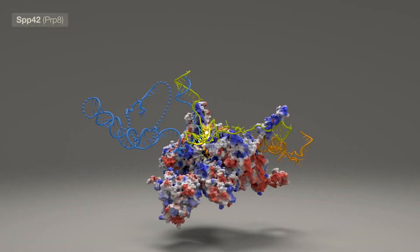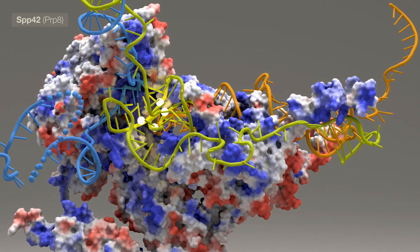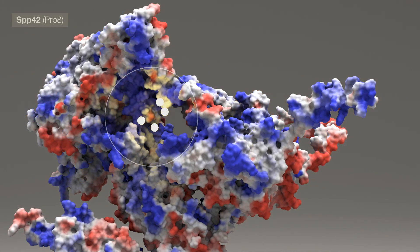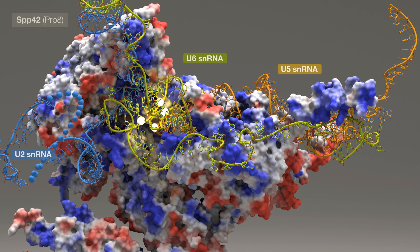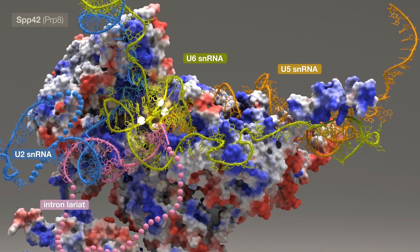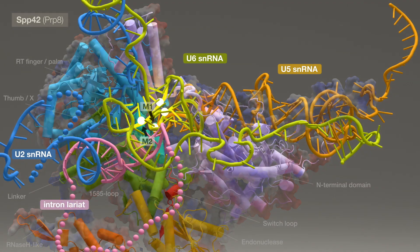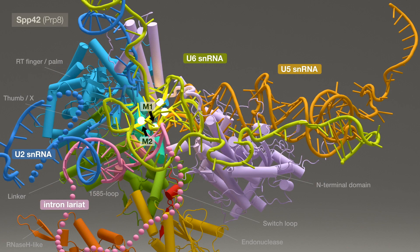Safeguarding a conserved active site, PRP8 protein harbors a positively charged cavity that anchors spliceosomal RNAs and functions as a central catalytic scaffold for splicing via a consort of domains.